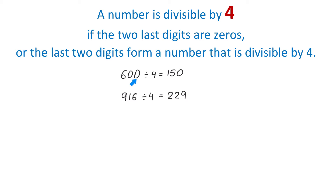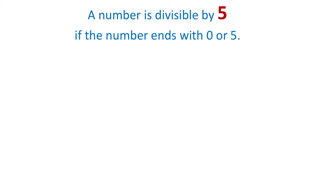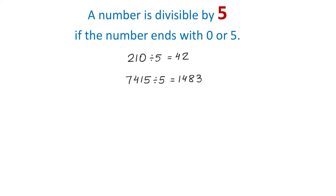So, if the last two digits of a number are zeros, then this number is divisible by 4. And if the last two digits of a number form a number that is divisible by 4, like in this example — 16 is divisible by 4 — then the whole number is divisible by 4. A number is divisible by 5 if the number ends with 0 or 5. For example, 210 is divisible by 5 because this number ends in 0, and 210 divided by 5 is 42. The number 7,415 is also divisible by 5 because this number ends with 5, and 7,415 divided by 5 is 1,483. So, if a number ends with 0 or with 5, this number is divisible by 5.